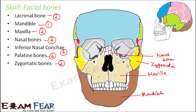The zygomatic bones, shown in yellow, are two in number — one on each side of the face — and they form the cheeks. If you touch your cheekbones you can feel the hard bone there; that is the zygomatic bone, which forms the most prominent part of the cheek. Finally, the vomer is a single bone located at the nose tip — a triangular-shaped plate-like structure present at the floor of the nasal cavity.